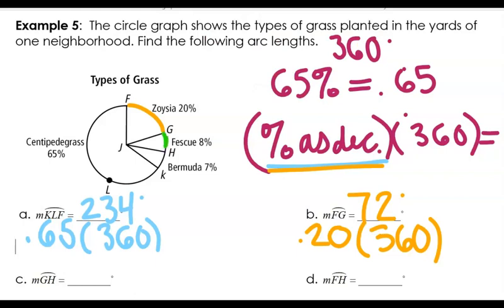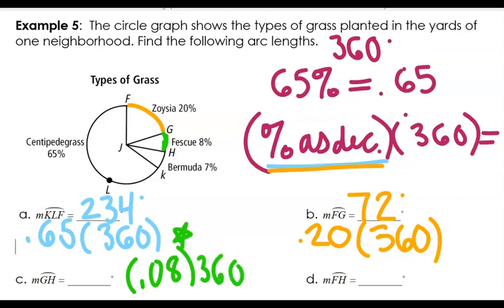Now arc GH. GH is 8%. Here's a real trick: 8% is not 0.8 — it is 0.08. So remember, you move the decimal place twice. All I'm doing is writing 8% as a decimal — 0.08 times 360. Don't be afraid of a decimal for the arc length. That's okay: 28.8 degrees.